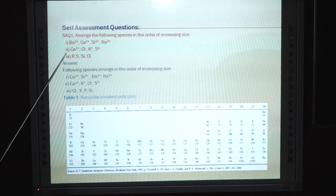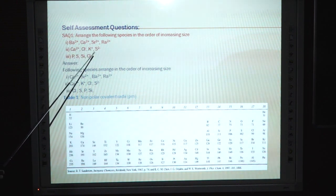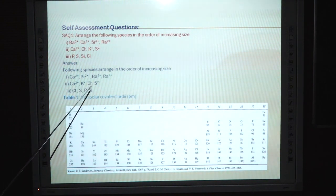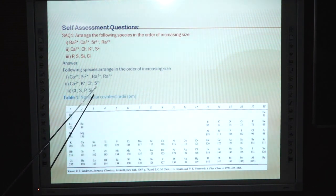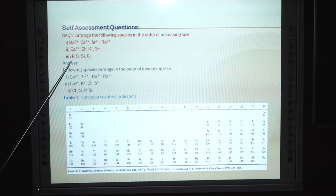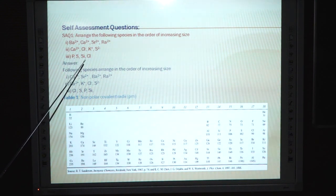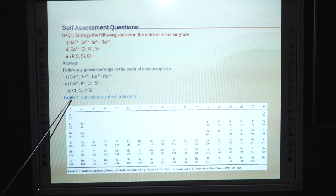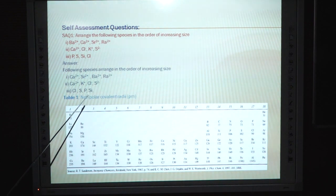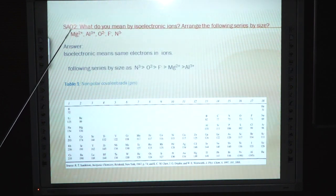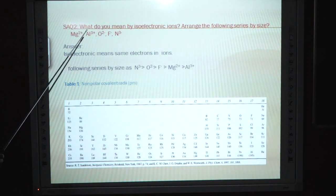Continuing question 1, arrange in increasing size: calcium, potassium, chlorine, sulfur — order is chlorine < sulfur < calcium < potassium (size decreases left to right in a period). And for phosphorus, sulfur, silicon, chlorine — order is chlorine < sulfur < phosphorus < silicon.